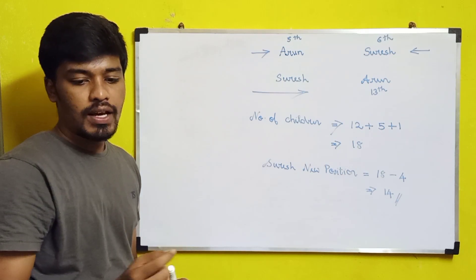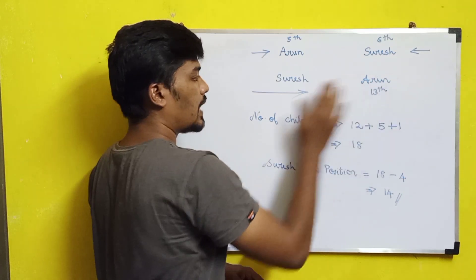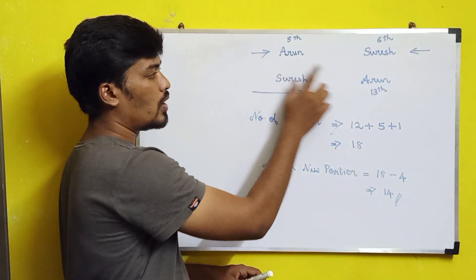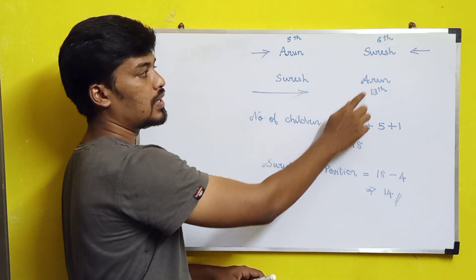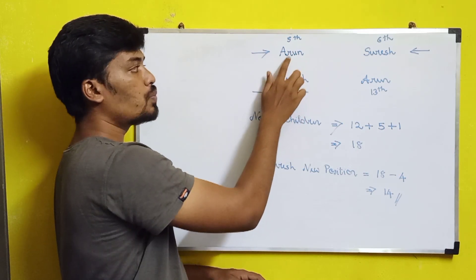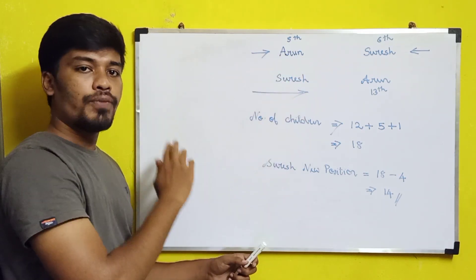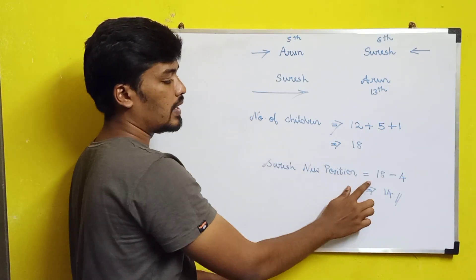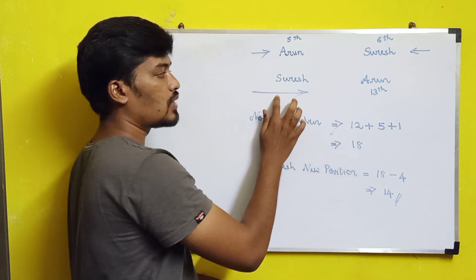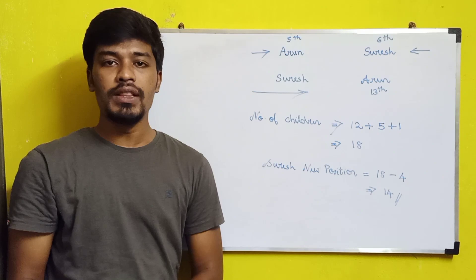Now we need to find Suresh's position from the right. Suresh has taken Arun's original position, which was 5th from the left. So Suresh is now 5th from the left. To find his position from the right, we subtract 4 from the total of 18, giving us 14. Therefore, Suresh's position is 14th from the right. 14th is the correct answer.